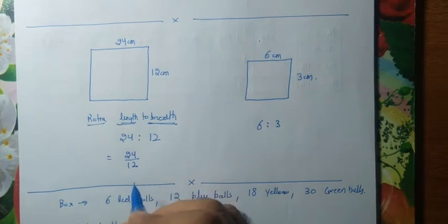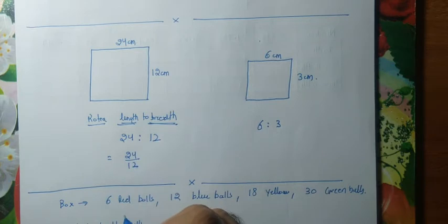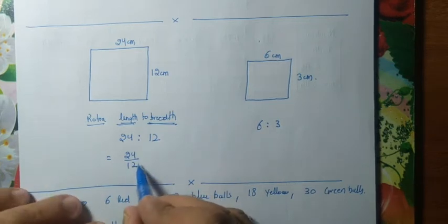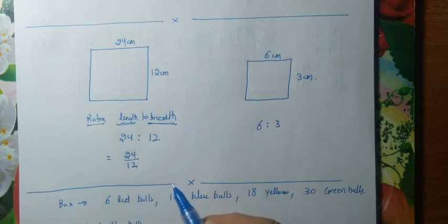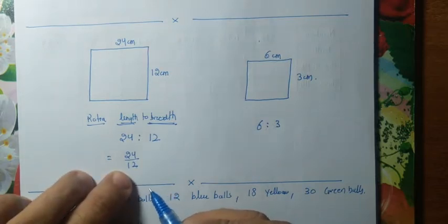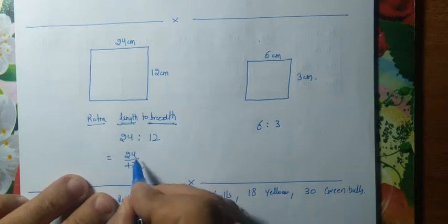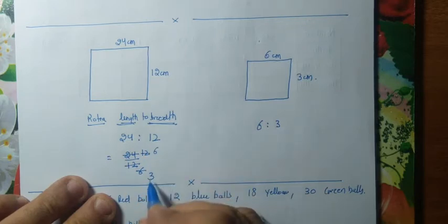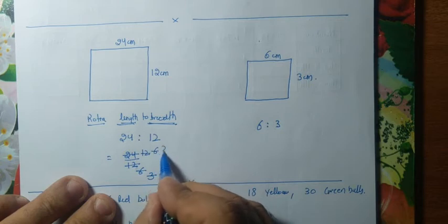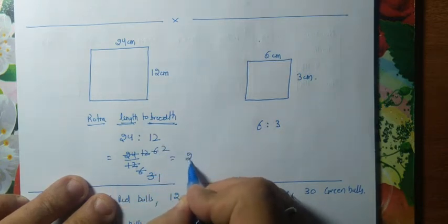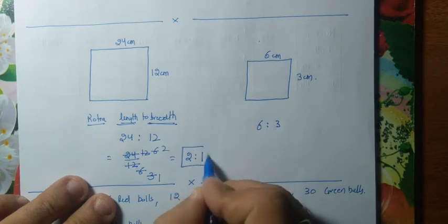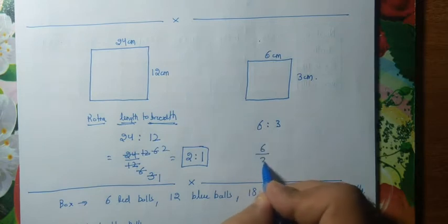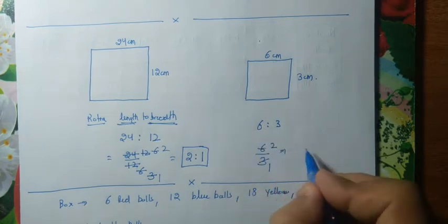The ratio of the second frame is 6 : 3. To simplify 24 by 12: divide by 2 to get 12 by 6, divide by 2 again to get 6 by 3, then divide by 3 to get 2 by 1. So ratio is 2 : 1. For 6 : 3, divide by 3 to get 2 : 1. Both simplify to 2 : 1.